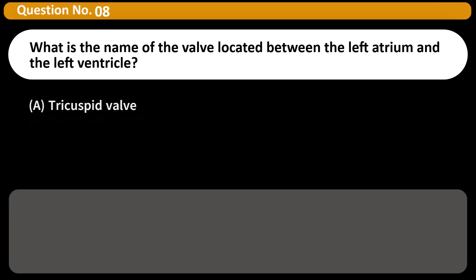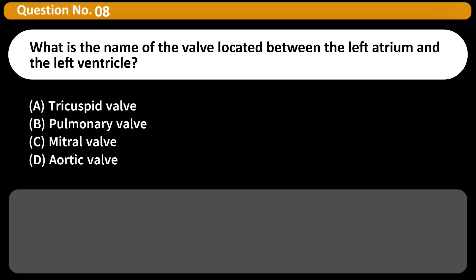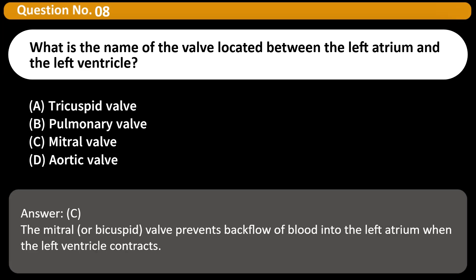What is the name of the valve located between the left atrium and the left ventricle? A) Tricuspid valve, B) Pulmonary valve, C) Mitral valve, D) Aortic valve. Answer: C. The mitral or bicuspid valve prevents backflow of blood into the left atrium when the left ventricle contracts.